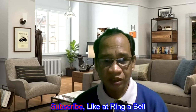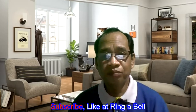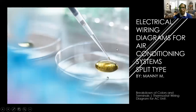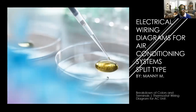So let us start our lecture on electrical wiring and diagrams for air conditioning. Our introductory title is 'Electrical Wiring Diagrams for Air Conditioning System, Split Type.' We will also cover the window type, where everything starts from the basics. From basic to basic — that's where everything begins before you become a master in air conditioning, up to industrial-level units. Breakdown of colors, terminal, and thermostat wiring diagram for AC unit.